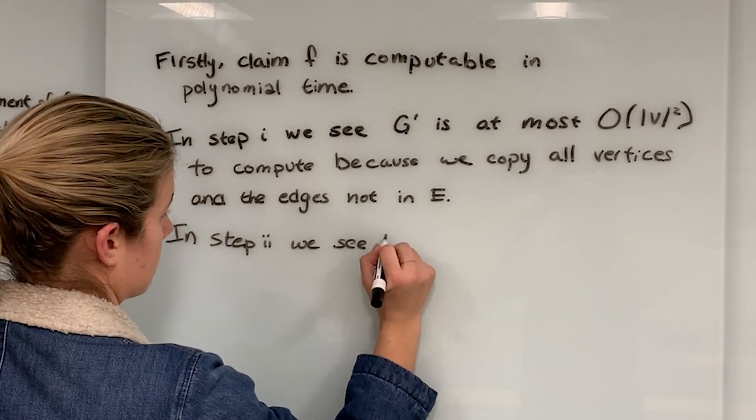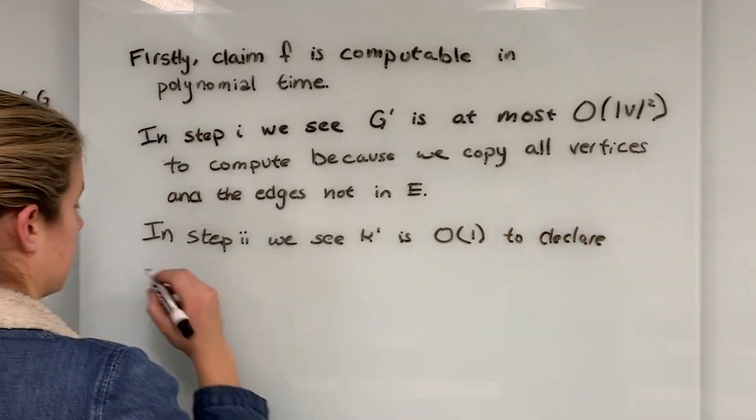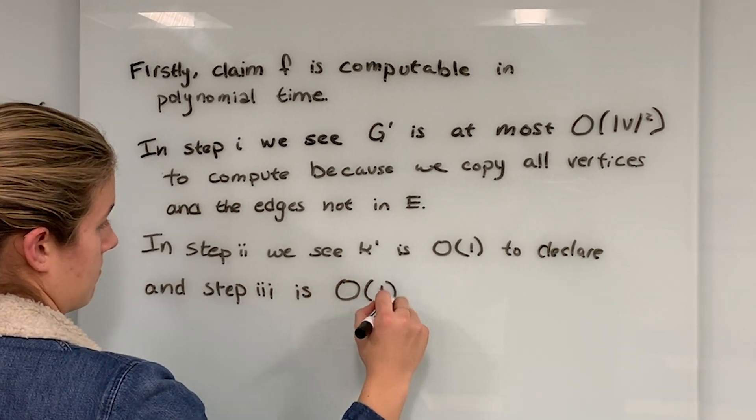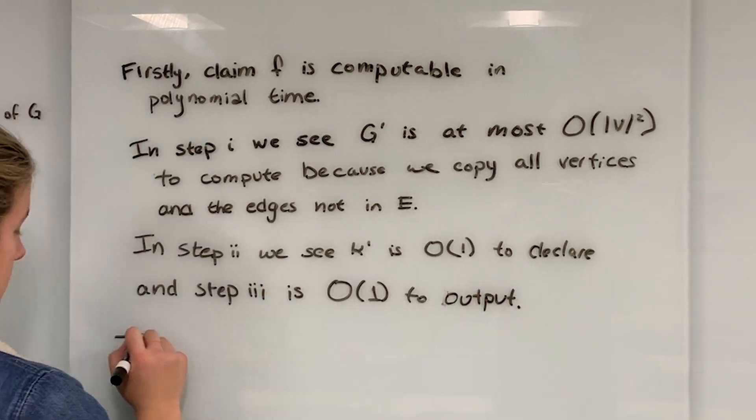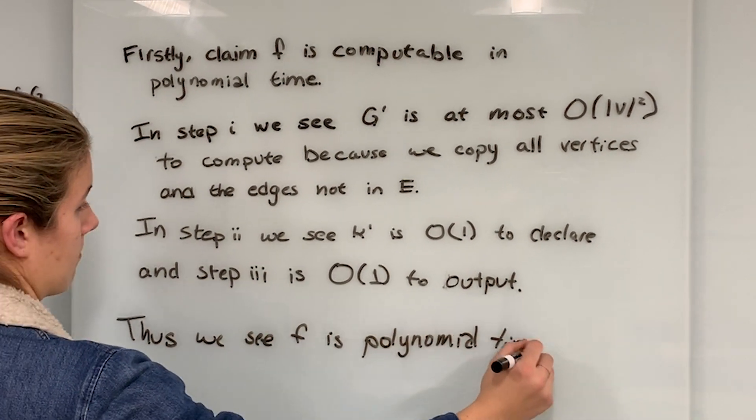In step 2, we see K' is in constant time to declare, and step 3 is constant time to output. Thus, f runs in polynomial time, on the order of V squared.